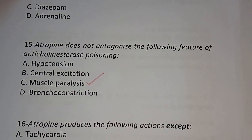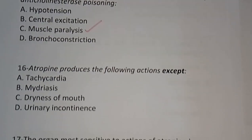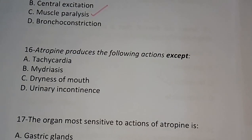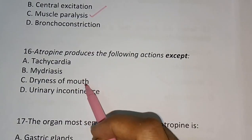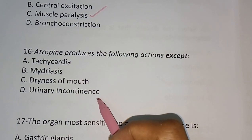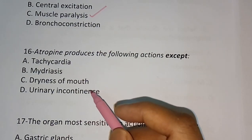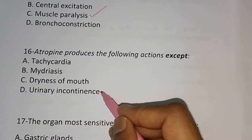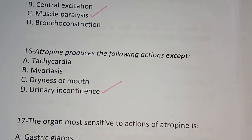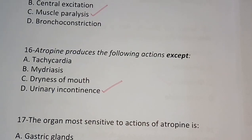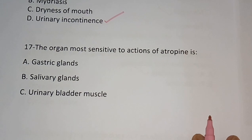Question number sixteen: Atropine produces the following actions except — (A) tachycardia, (B) mydriasis, (C) dryness of mouth, (D) urinary incontinence. The correct answer is urinary incontinence.